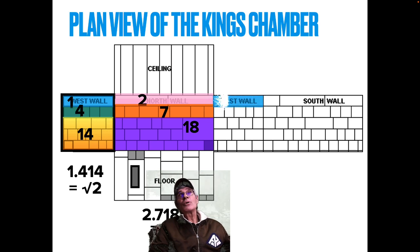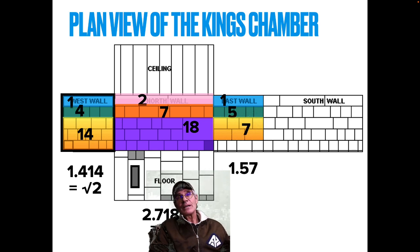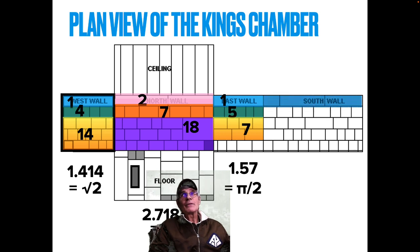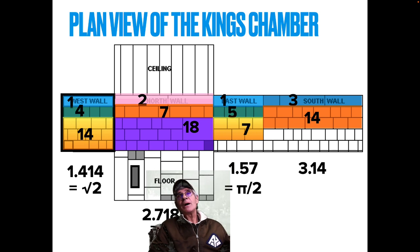On the east wall you've got one block in the top course, five blocks in course 2, and rows 3 and 4 have 7. That gives 1.57, which is pi over 2. Then if we take three blocks in the south wall and the next two courses have 14, there's pi again. Unbelievable.